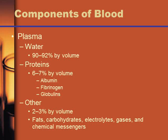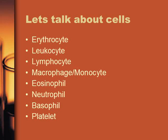The specific blood cells include erythrocytes, leukocytes — including lymphocytes, macrophages, monocytes, eosinophils, neutrophils, and basophils — and platelets. The three main types of blood cells are red blood cells, white blood cells, and platelets. Erythrocyte means 'red cell' — erythro means red, cyte means cell.